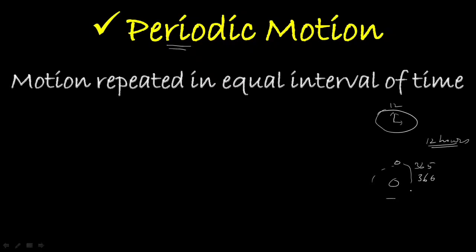Other examples of periodic motion include rocking a chair, a bouncing ball, a swing in motion, and the Earth in its orbit around the sun. These are all examples of periodic motion. In each case, the interval of time for repetition of the motion is called the period.